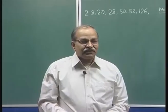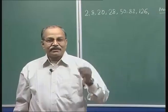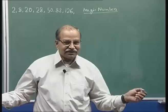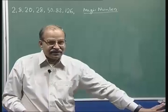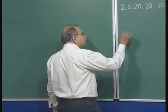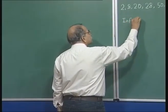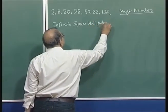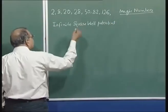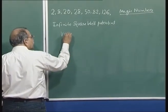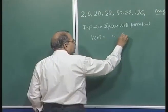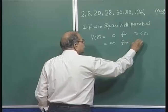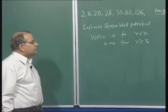If gaps appear in the energy-level spectrum, shell structure emerges. The key question is: what average potential should one use? The first choice is the infinite square well potential: V(r) = 0 for r < r₀, and V(r) = ∞ for r > r₀.